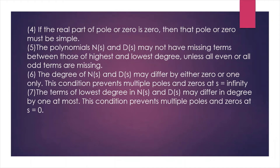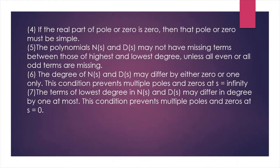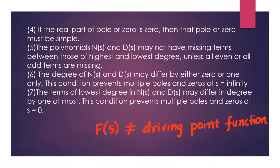The seventh condition: the terms of lowest degree in N(s) and D(s) may differ by at most 1. This condition prevents multiple poles or zeros at s = 0. If any of these conditions are not satisfied, then f(s) is not a driving point function.